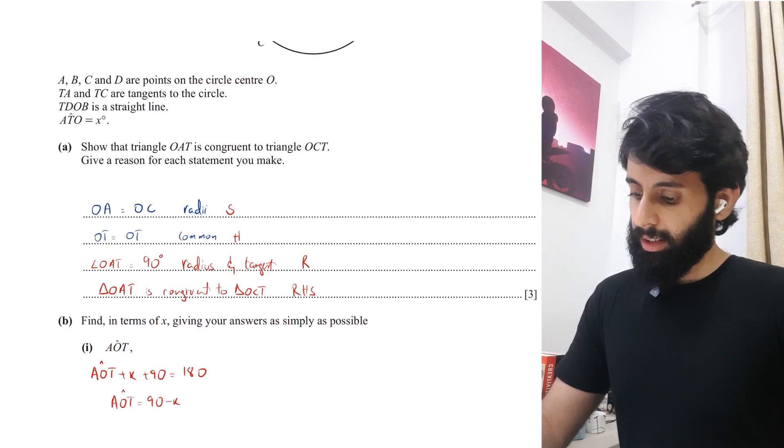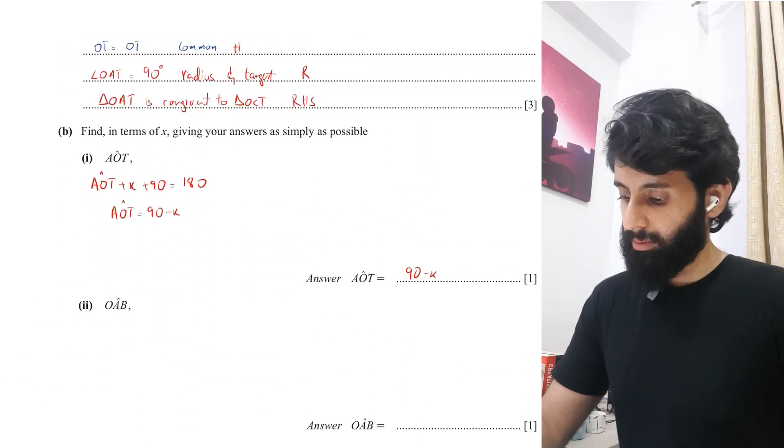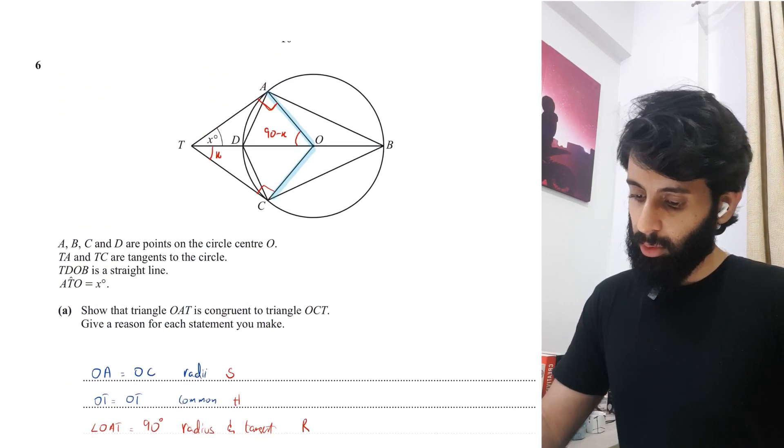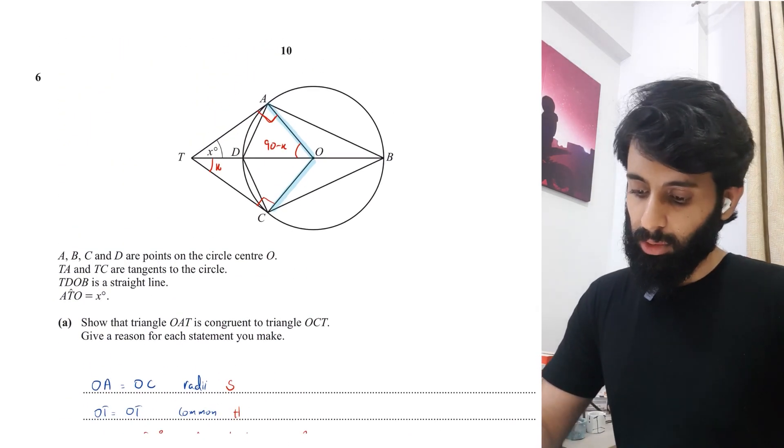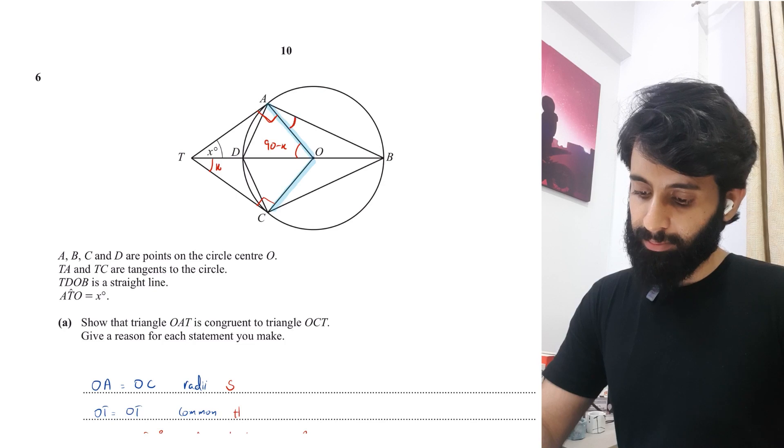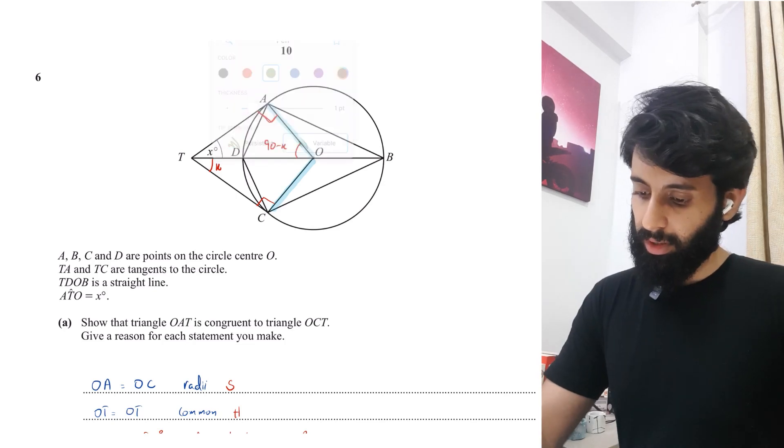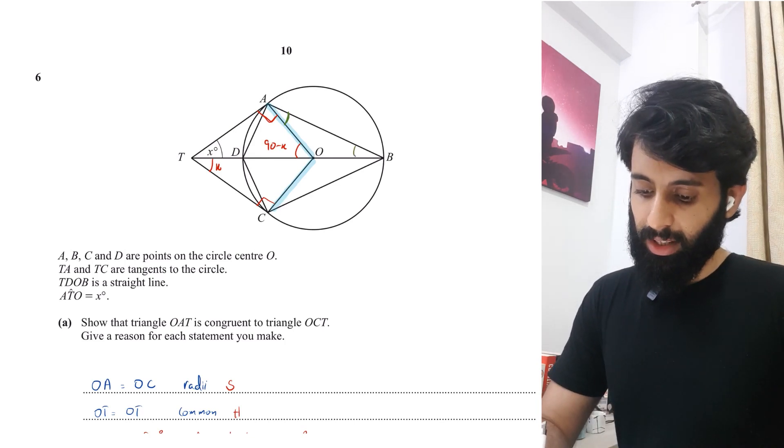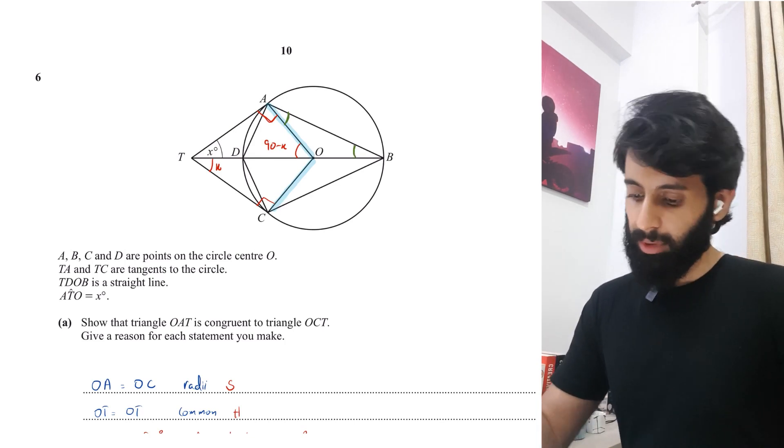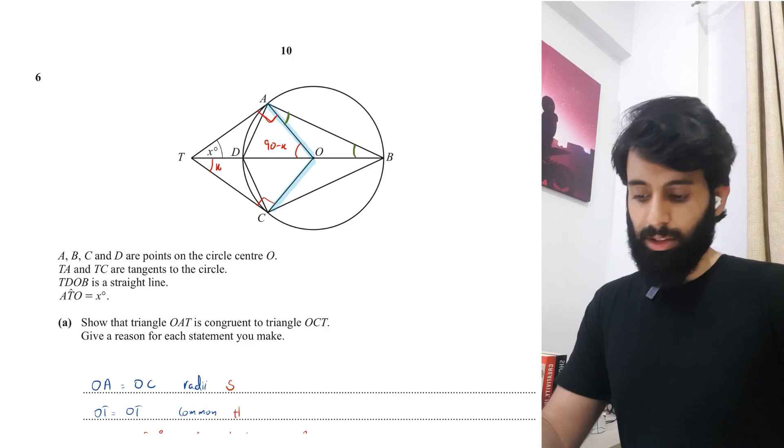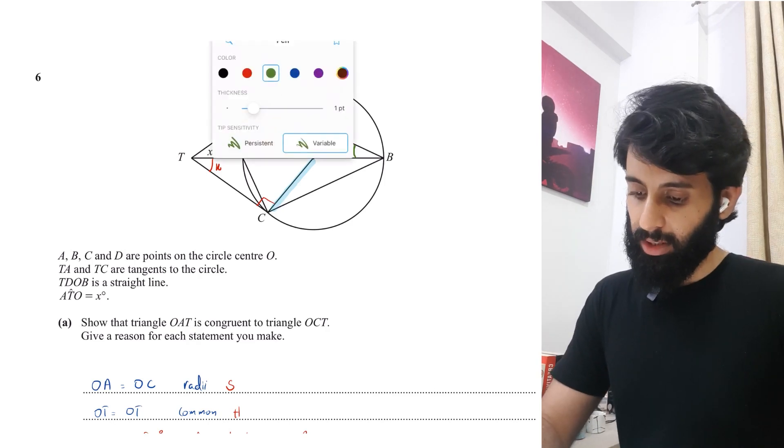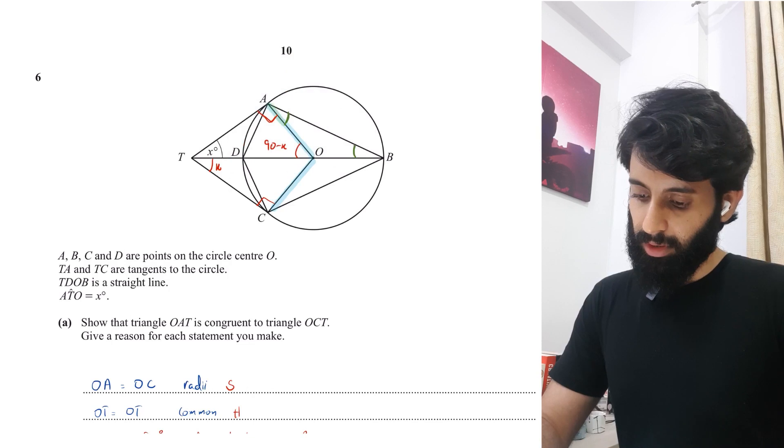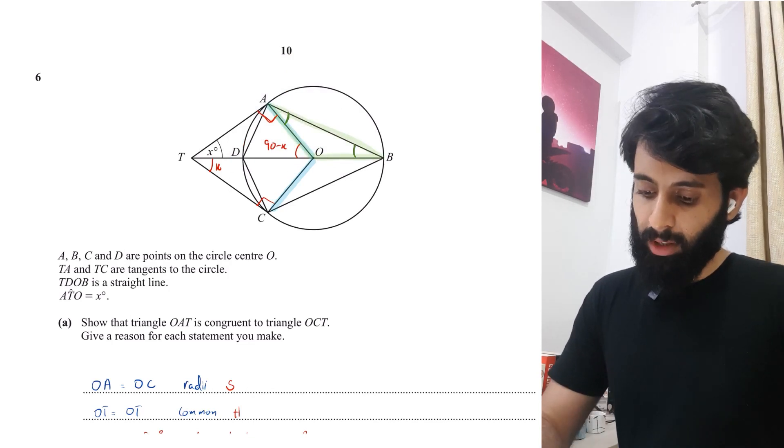Next point is angle OAB. Let me switch to a different color. Before I write OAB, let's find out this angle. Triangle OAB is going to be an isosceles triangle. I'll highlight the triangle that I'm using so it doesn't create any confusion. This is the triangle that I'm focusing on right now. Triangle OAB is going to be an isosceles triangle because OA and OB are both radii of the same circle.